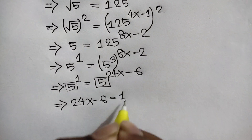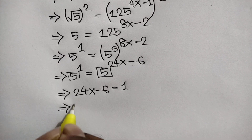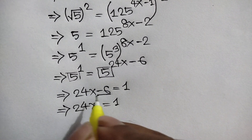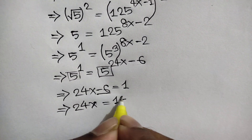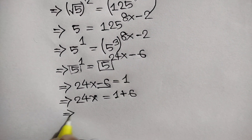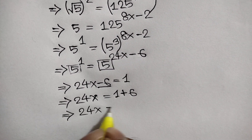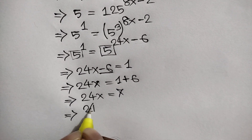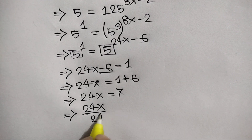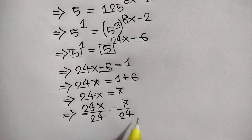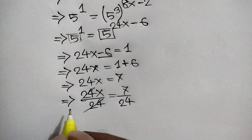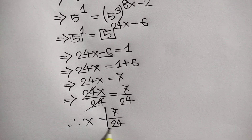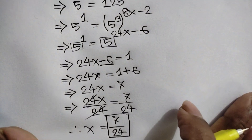So we will write 24x minus 6 is equal to 1. Taking negative 6 to the right side: 24x is equal to 1 plus 6, which is 7. Now dividing both sides by 24: 24x over 24 is equal to 7 over 24. This 24 cancels out, so the value of x is 7 over 24. If you like this video, please subscribe to my channel.